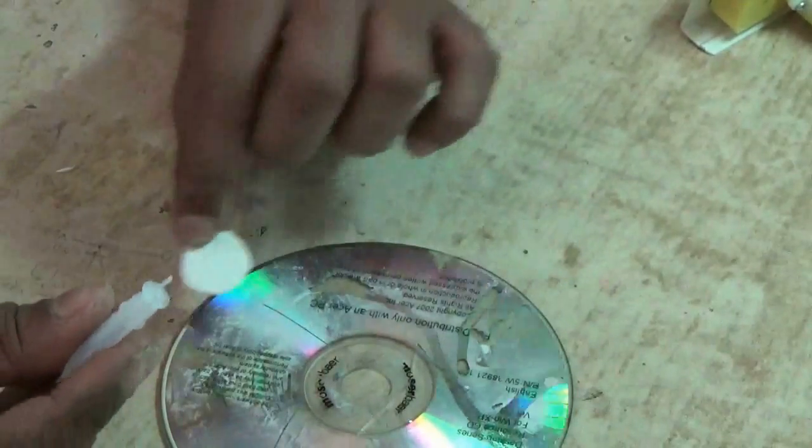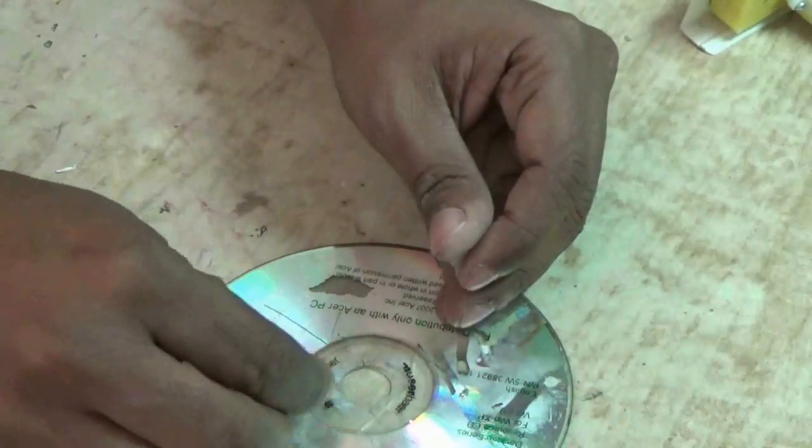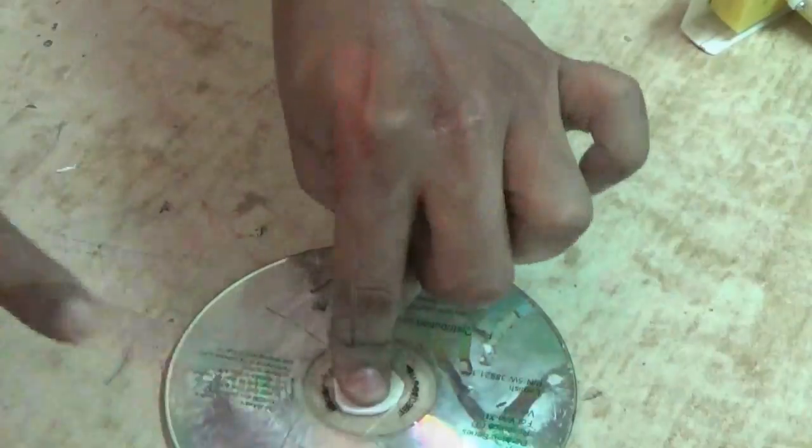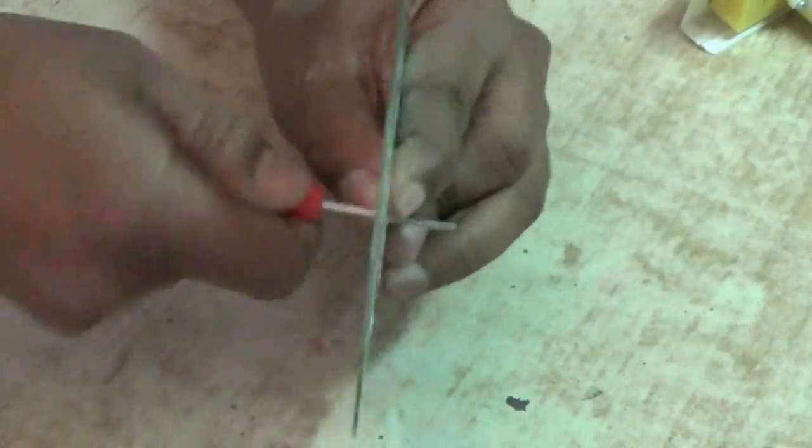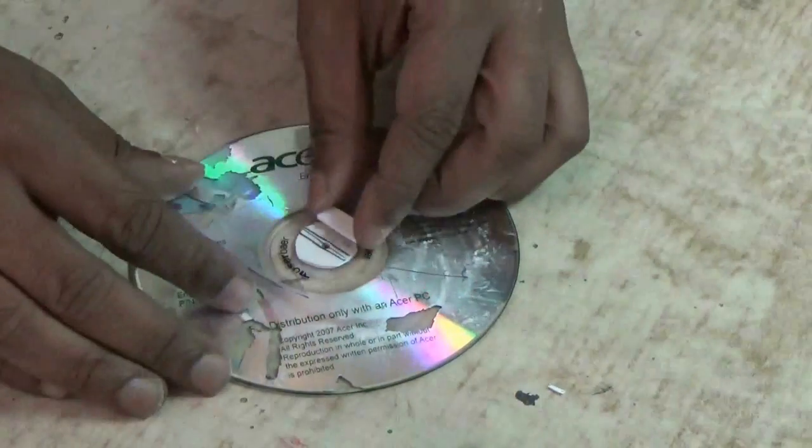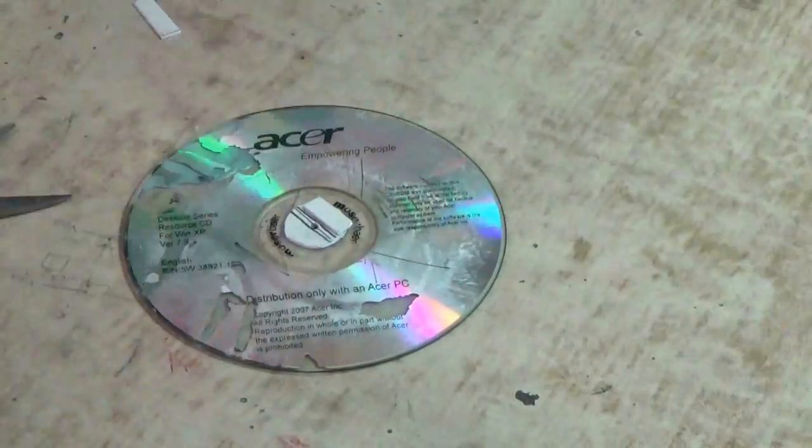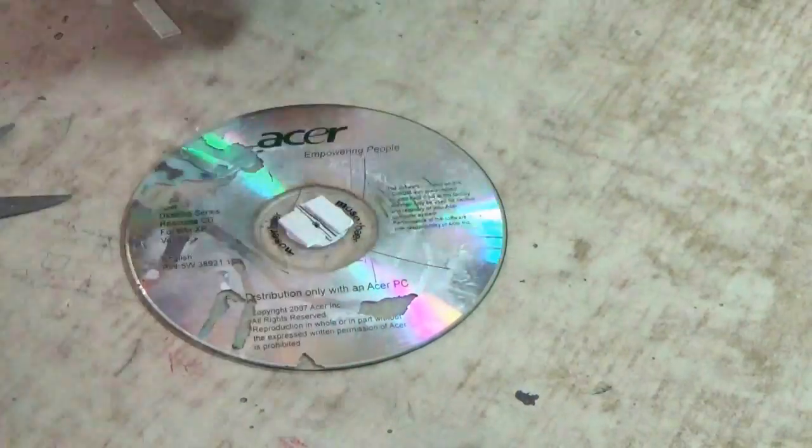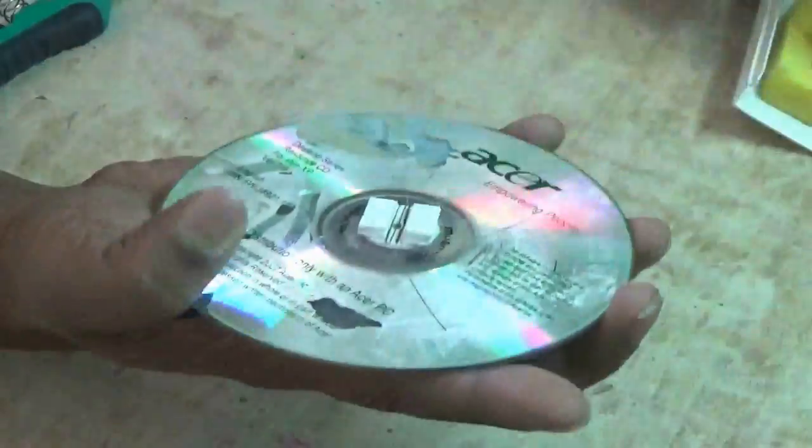Now collect two old CDs. Block the center hole using a piece of plastic and super glue. Then make a 2 mm hole at the center. Glue two pieces of plastic 4 mm apart. Thus you can make a slot to fit the motor shaft.